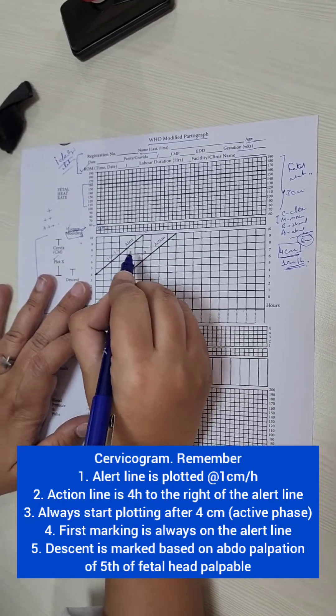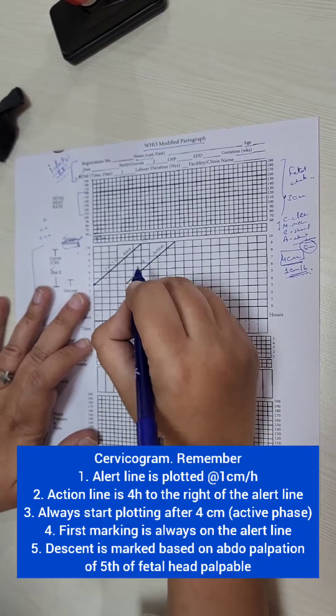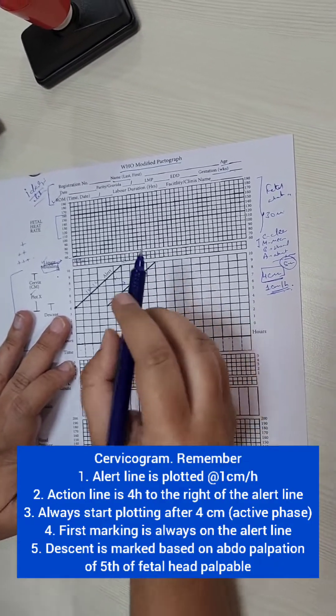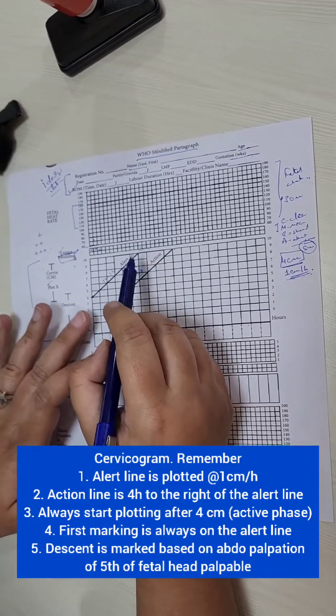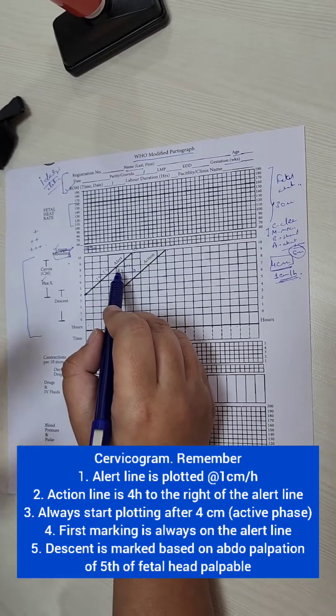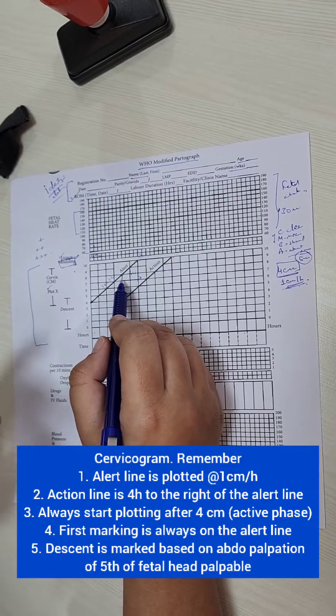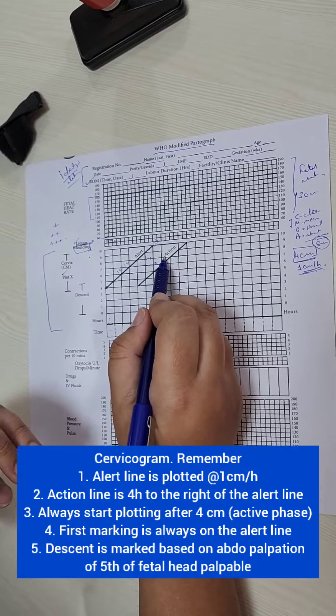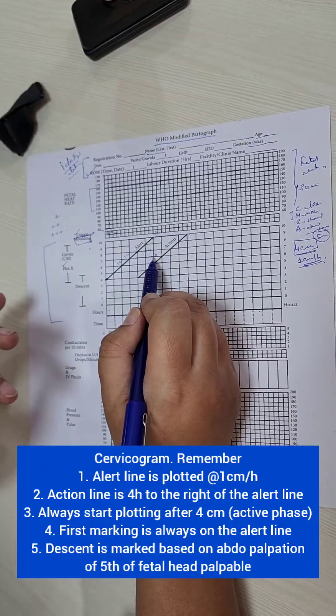4 hours to the right of the alert line is the action line. So basically it itself suggests if the line is crossing the alert line, that means we have to be alert. We have to find out the reason why the progress is delayed and take corrective measures if possible.